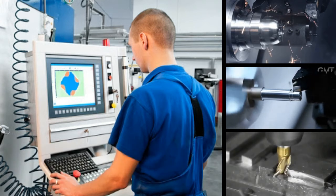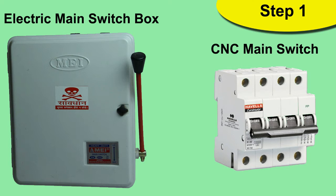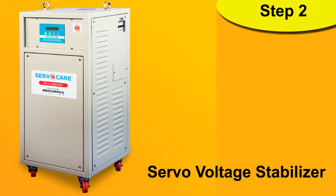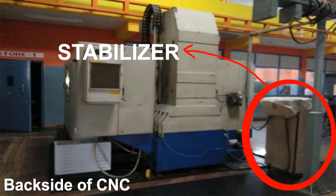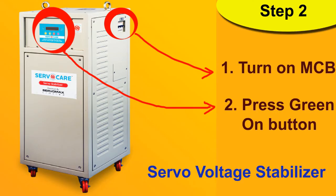To start a CNC machine, Step 1 is simple: switch on the main power supply. In Step 2, you have to find the voltage stabilizer, which is usually placed behind the CNC machine. It is used to balance fluctuating voltage to provide a stable voltage. Switch it on in two steps: first, turn on the MCB, then press the green ON button near the digital screen.